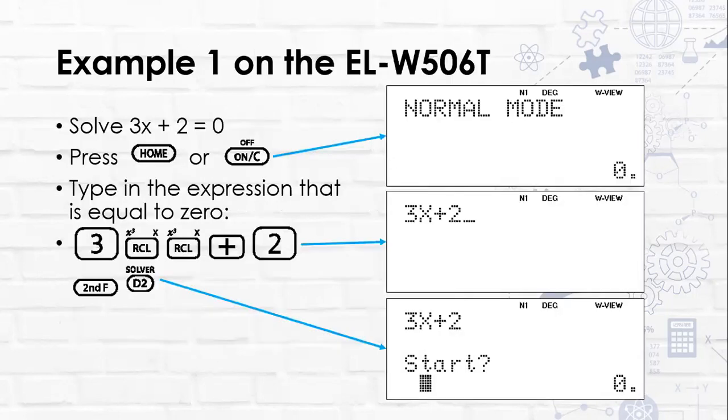So firstly, our first example on our EL-W506T. So we've been given 3x plus 2 is equal to zero. So you can see it's already been put into the form of an expression equal to zero. So what I'm going to do is pull up my calculator for you.